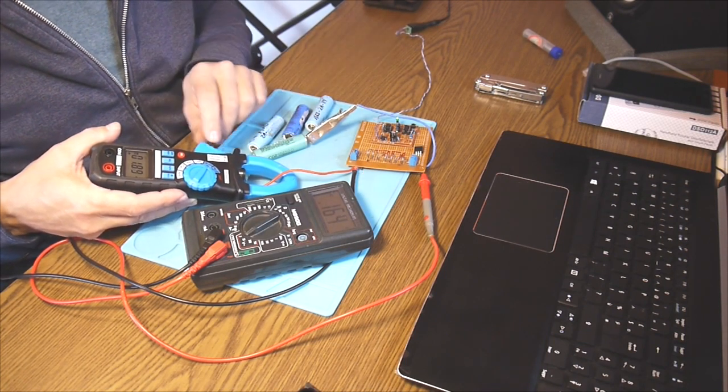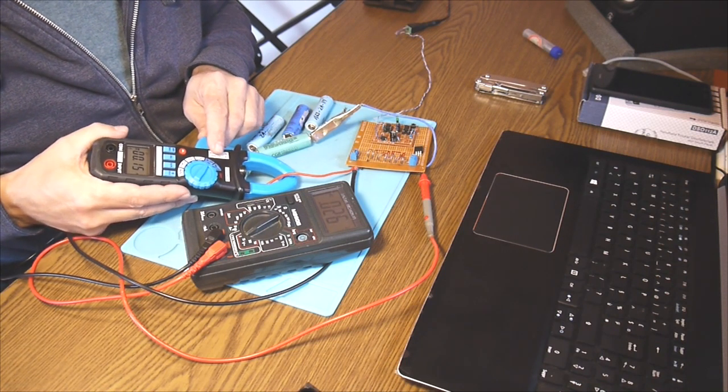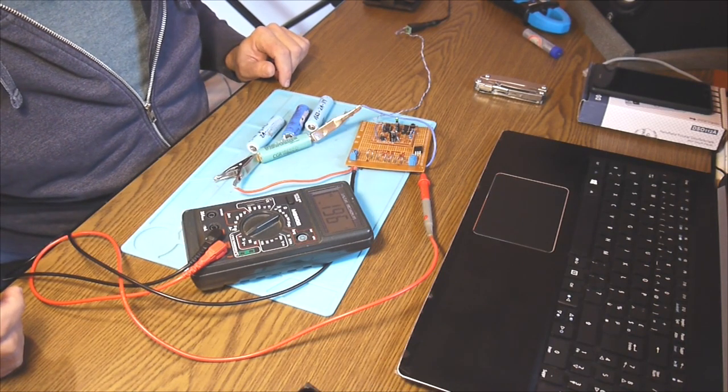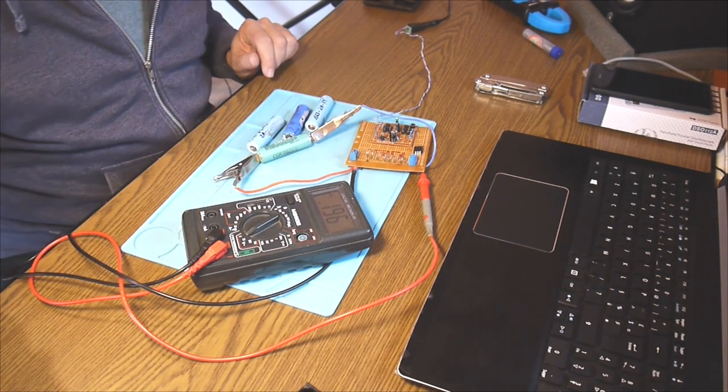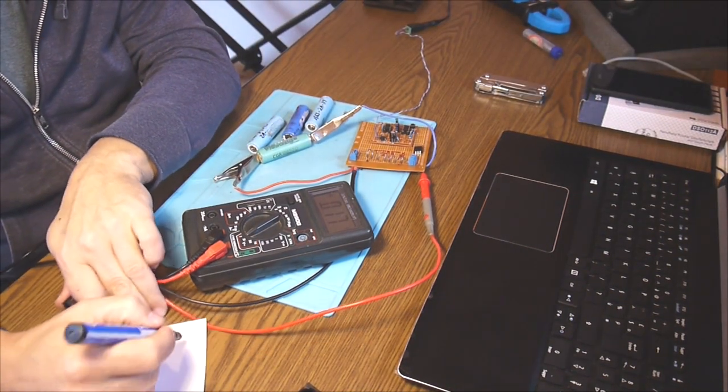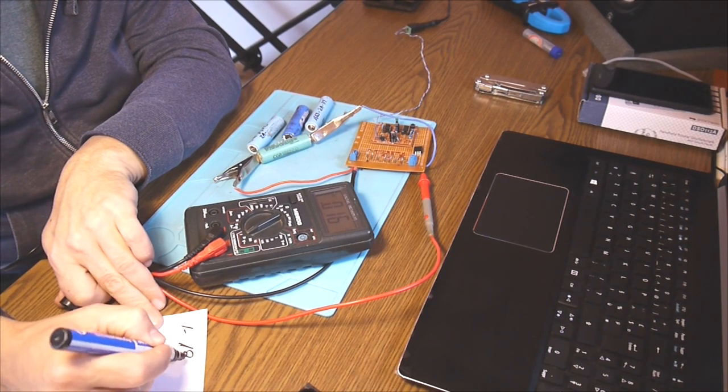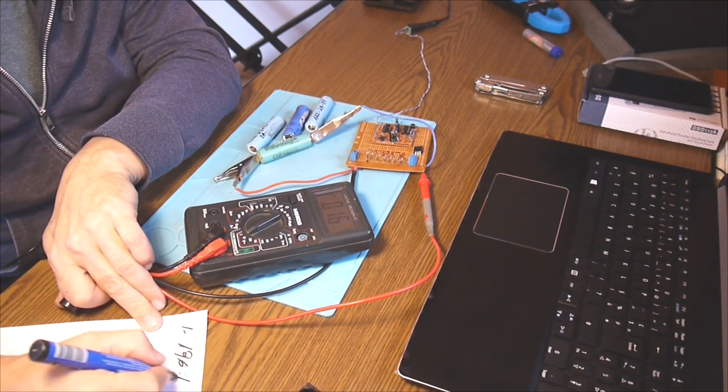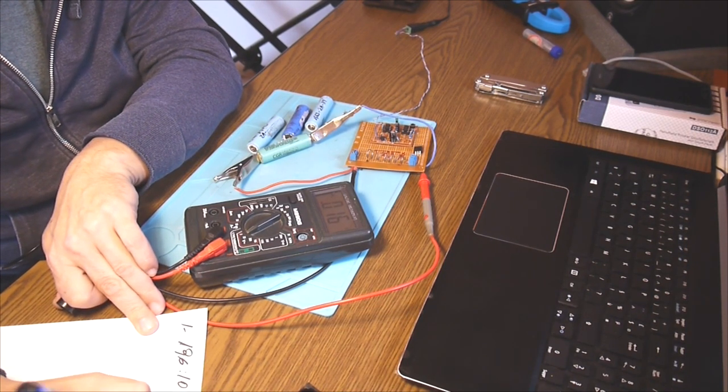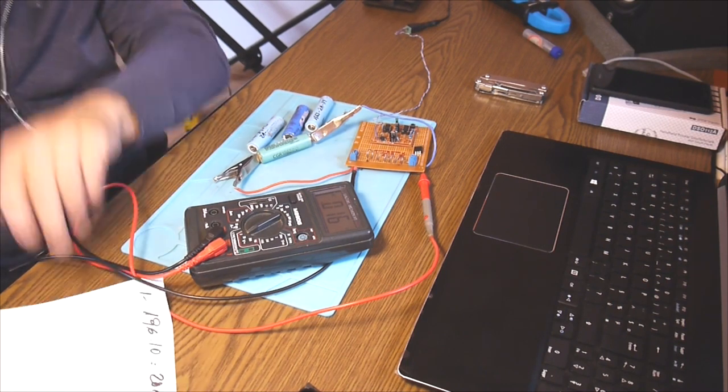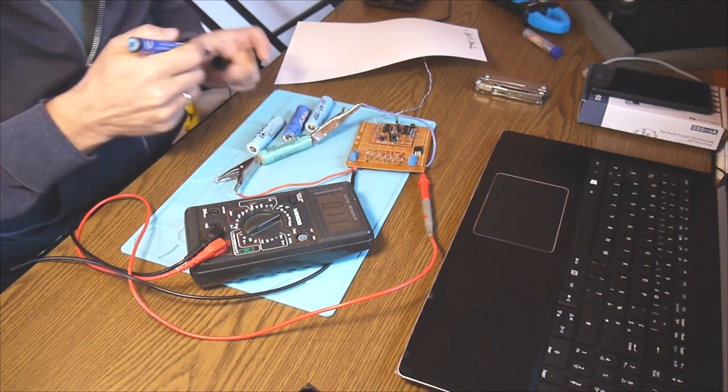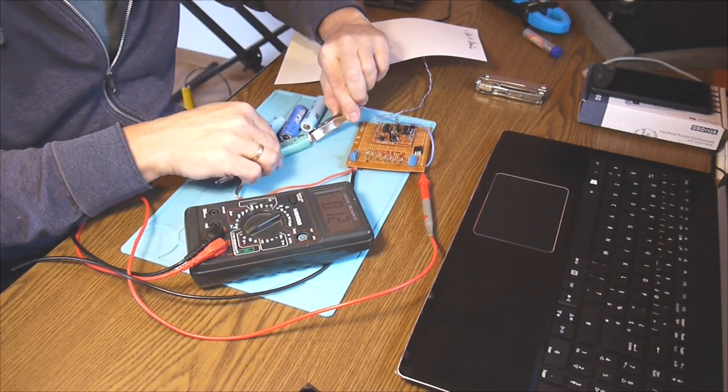It's almost at the top of the current. It should be 198, 196. Let's write this down. Cell number one: 196 divided by 10, that's like let's say 20 milliohms. This is cell number one. Let's try this one now.